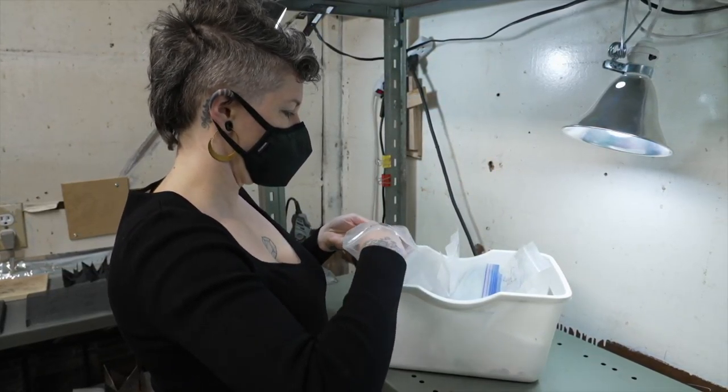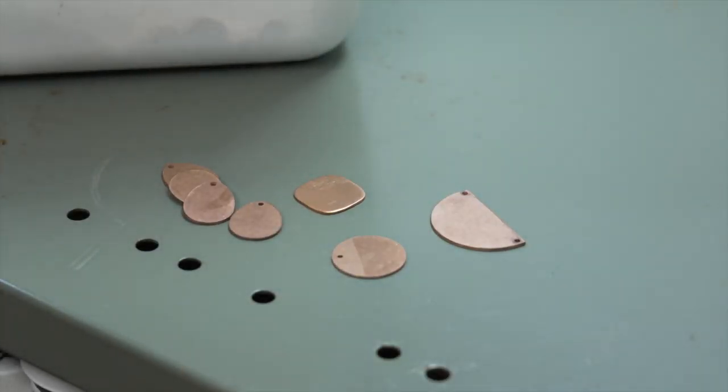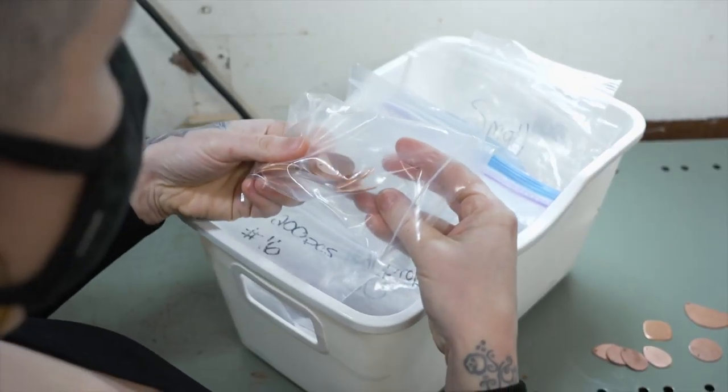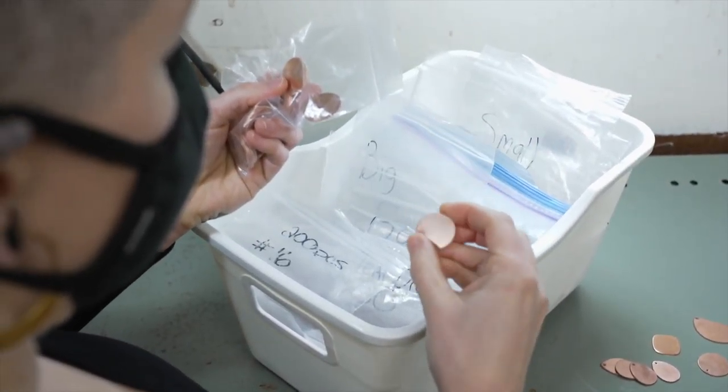Making the jewelry begins with designing the shapes of the earrings and necklaces, which are cut by a local metal worker. After selecting shapes for necklaces and earrings, production begins.